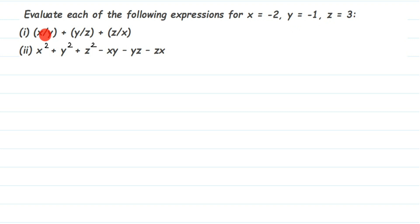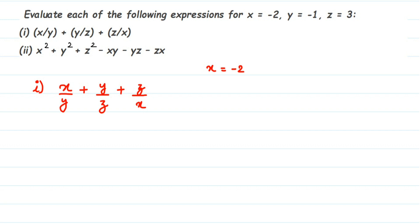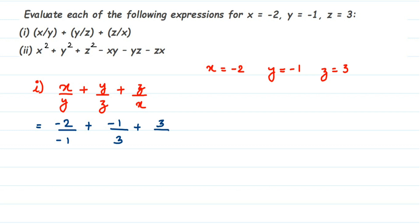The first question is x/y + y/z + z/x. We have x = -2, y = -1, and z = 3. Substituting the values: in place of x I put -2, so it's -2 by y value -1, plus y value -1 by z value 3, plus z value 3 by x value -2.